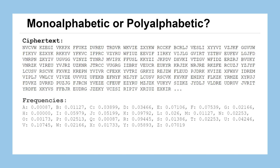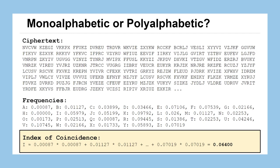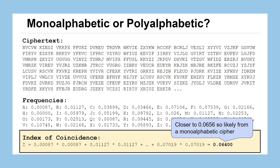Looking at another ciphertext and doing the same calculation, we get 0.064, which is much closer to 0.0656 — so that would most likely be a monoalphabetic cipher. Knowing that, we might try a brute force attack through all 312 keys for the affine cipher, or use a known plaintext attack to set up congruency equations. The IC tells us which approach to take.